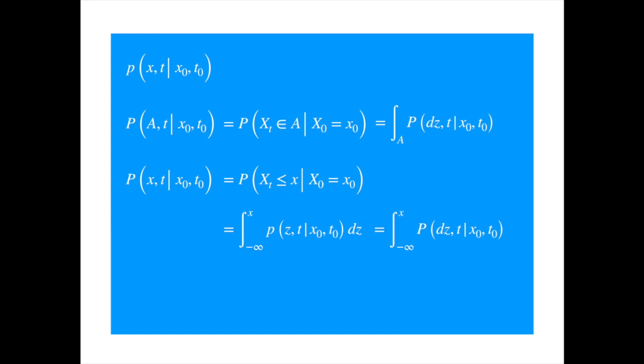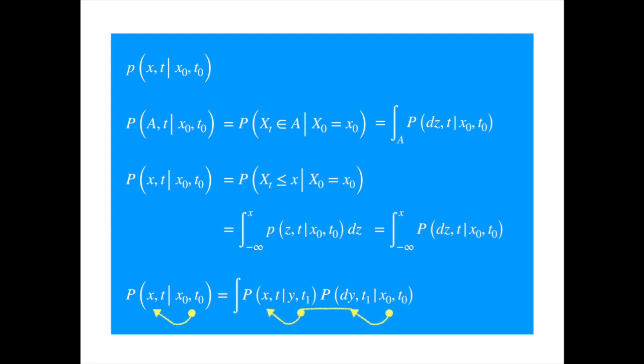Now let's recall the Chapman-Kolmogorov equation for Markov processes. It says the probability of going from x₀ at time t₀ to x at time t is equal to the probability of going from x₀ to x through an intermediate point y, integrated over the whole range of values that y can take. This equation is in terms of probability. Previously in the forward equation video, we saw this equation in terms of probability density.